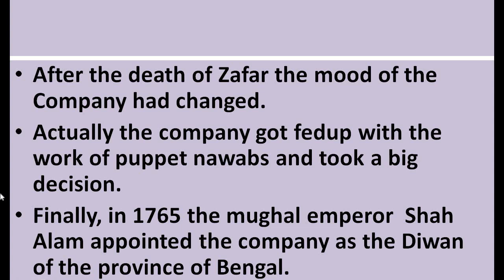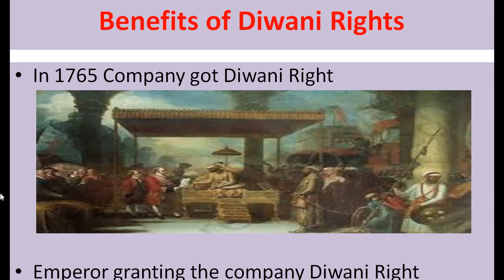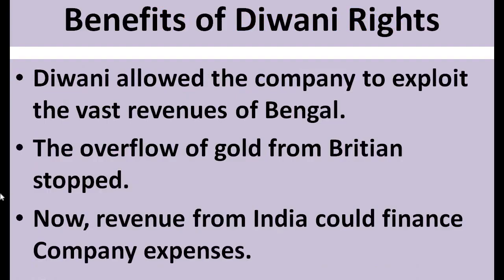Diwan is a term used for a person who has the right to collect taxes. According to this Diwani right, the company got the right to collect revenues and taxes in Bengal. Here, a picture is shown in which Mughal Emperor Shah Alam is granting the company the Diwani right. This Diwani right allowed the company to exploit the vast revenues of Bengal.